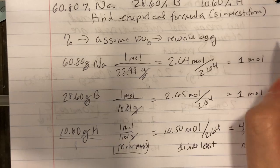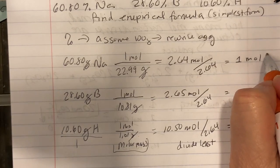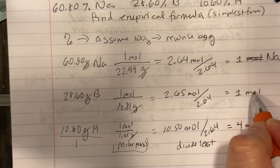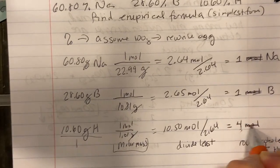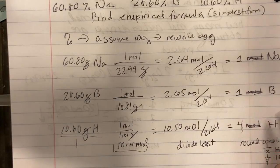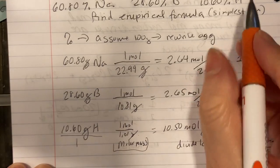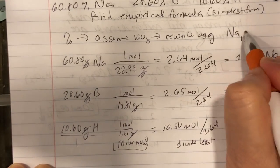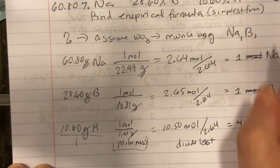And now we have our answer. So there is 1 sodium, and actually we don't even have to call it moles, 1 boron, and 4 hydrogens. So how do we rewrite that? Na1, B1, H4.